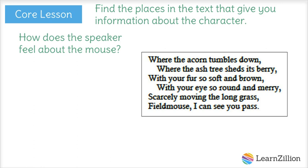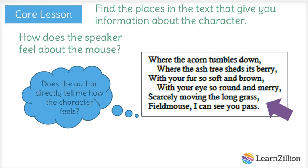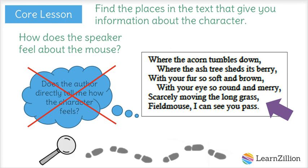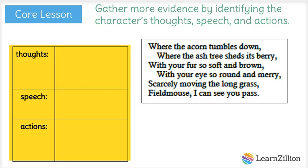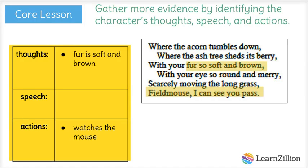As I glance back through the poem, I see information about the speaker right here in the first stanza. The author does not directly tell me about the character's feelings, so I need to do a little bit of detective work and identify what the character is thinking, saying, or doing. In line six, it says, field mouse, I can see you pass — so the speaker is watching the mouse. I'll jot that down as an action. The speaker also describes the mouse's fur as so soft and brown, and his eye as so round and merry. I'll add those to his thoughts.